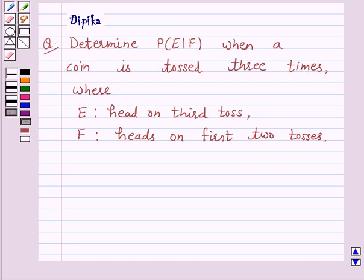Let's discuss a question which says determine probability of E upon F, P(E|F), when a coin is tossed three times, where E is the event head on third toss and F is the event heads on first two tosses.